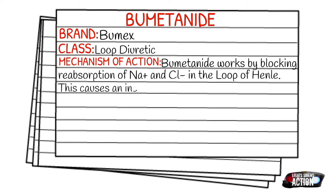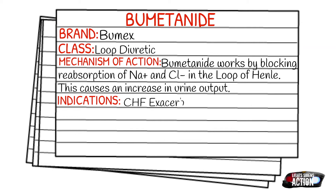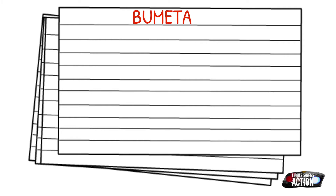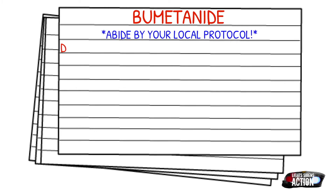Indications are CHF exacerbation, particularly CHF exacerbation with pulmonary edema. As always, please abide by your local protocol and stay within your scope of practice. Your adult dose for Bumex is going to be 0.5 to 1 milligram per kilogram over 2 minutes. That dose looks very similar to that of Lasix, also known as furosemide. Bumex is not recommended for pediatrics at all.